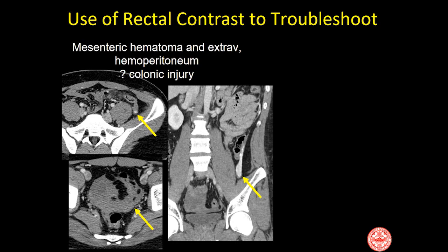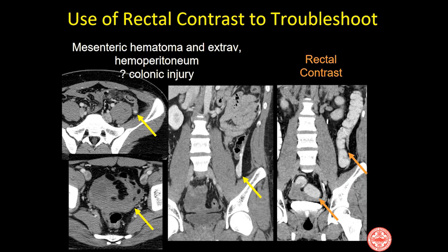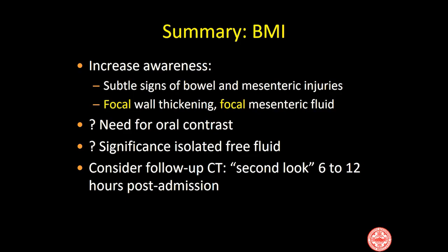The same approach applies to the rectum. If you have a question about a rectal or colonic tear, which are not very common in blunt trauma but do happen, you have the option of repeating CT with rectal contrast. In one patient with blood in the left paracolic gutter, rectal contrast was given and showed blood in the peritoneum but no definite evidence of rectal or colonic tear.